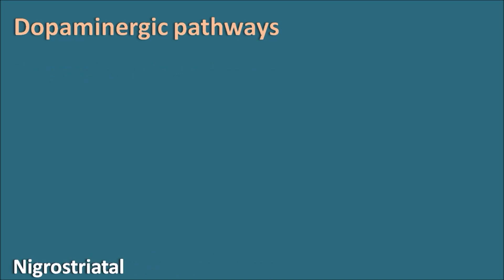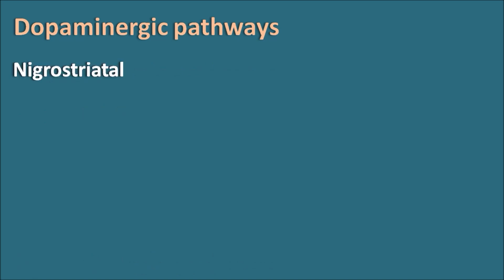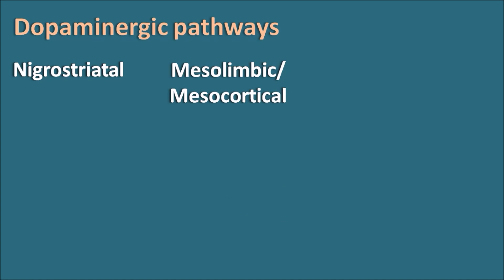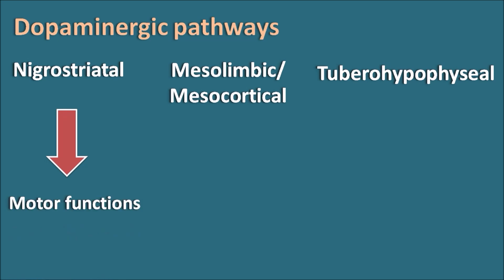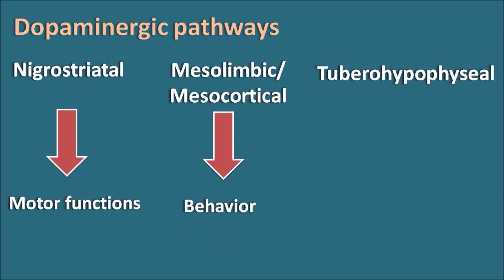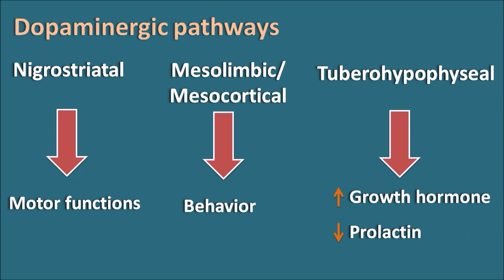Dopaminergic pathways are three types: the nigrostriatal pathway, the mesolimbic or mesocortical pathway, and the tuberoinfundibular pathway. The nigrostriatal pathway is responsible for control of motor functions in the body, whereas the mesolimbic and mesocortical pathway is responsible for the control of behavior. The tuberoinfundibular pathway is responsible for control of hormonal release — it increases growth hormone release and decreases prolactin release.